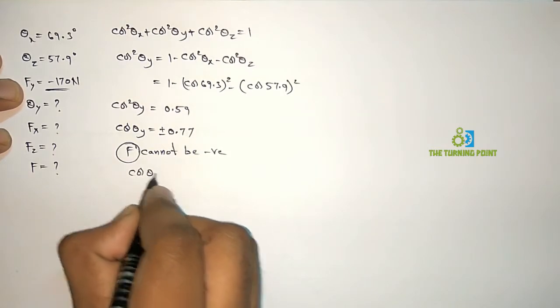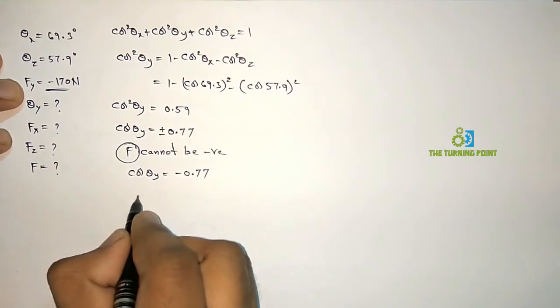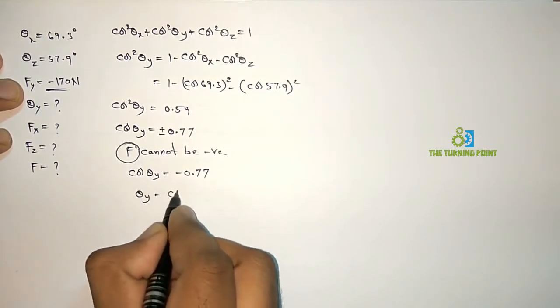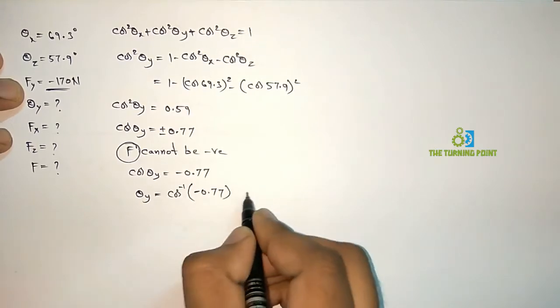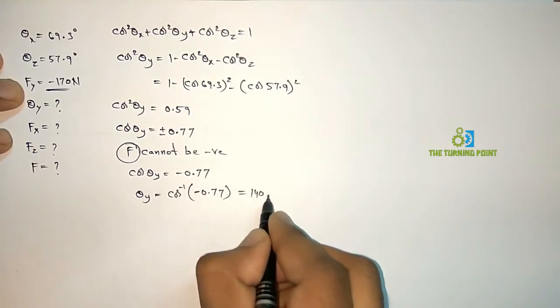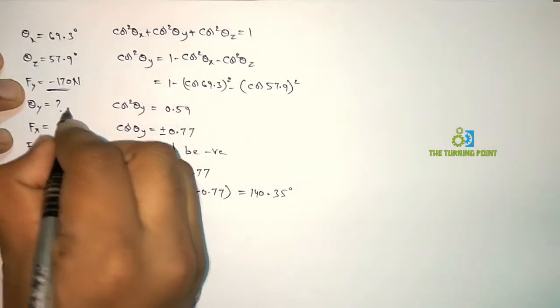From that Cos theta y is equal to minus 0.77. From this you can calculate Theta y which is nothing but Cos inverse of minus 0.77. You will get 140.35 degrees. So now Theta y is over.